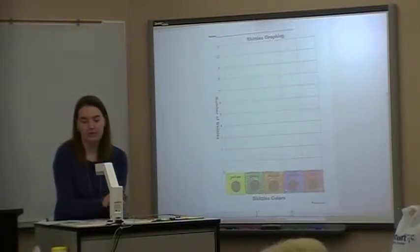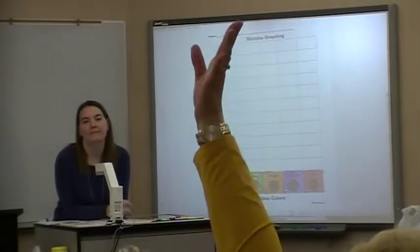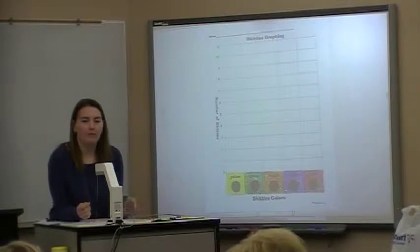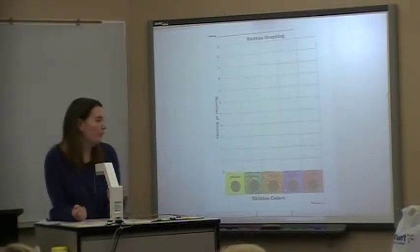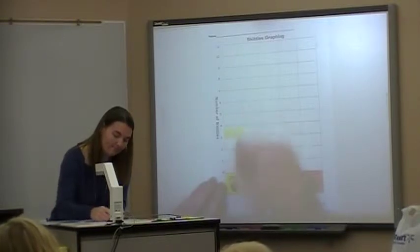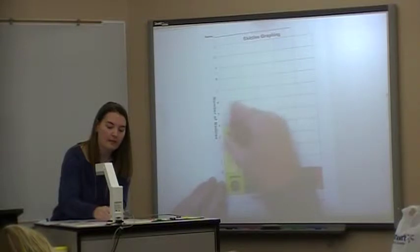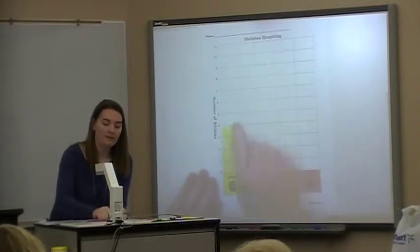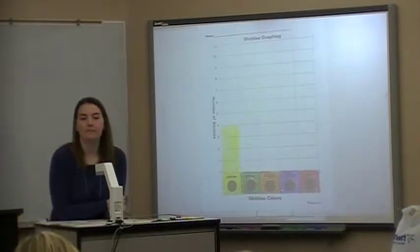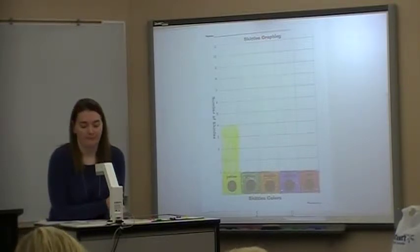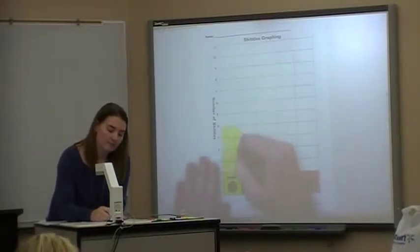Can anybody tell me what they think we're going to do now? What would be the next part of filling in our data? Count the number of Skittles — very good. You're going to refer back to your sorting mat where your Skittles are. I'm going to start with yellow. I have four yellow Skittles, so I'm going to count one, two, three, four boxes and color all those boxes. It does not have to be a work of art — I had four yellow Skittles, so I colored up to the four. Since we're sharing, you'll have to start somewhere different than your sharing buddy, and you just continue down the line, count your Skittles, fill in the box.